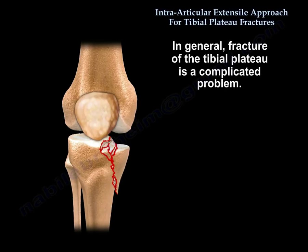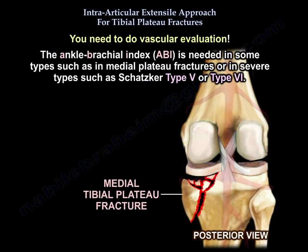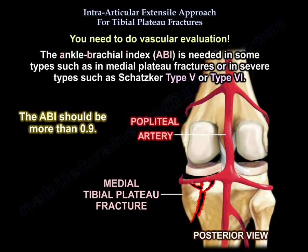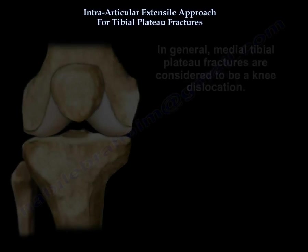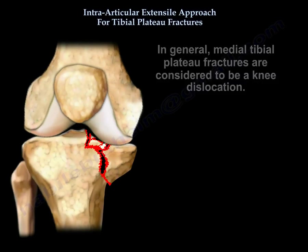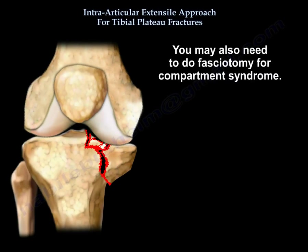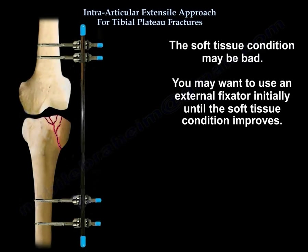In general, tibial plateau fracture is a complicated problem. You need to do vascular evaluation — the ABI is needed — in some types, like medial plateau fractures, or in severe types like Schatzker 5 or 6. Medial plateau fractures are considered a knee dislocation equivalent. You may also want to do fasciotomy for compartment syndrome. The soft tissue may be bad, and you may want to put an external fixator initially until the soft tissue condition improves.